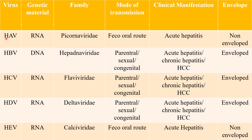Beginning with Hepatitis A virus: it is an RNA virus belonging to the Picornaviridae family. As you can see it's written RNA. The mode of transmission is the feco-oral route, which means it is transmitted by contaminated food and water — when food and water are contaminated by feces, Hepatitis A virus can transmit. The clinical manifestation is acute hepatitis — acute inflammation of the liver — and it is a non-enveloped virus.